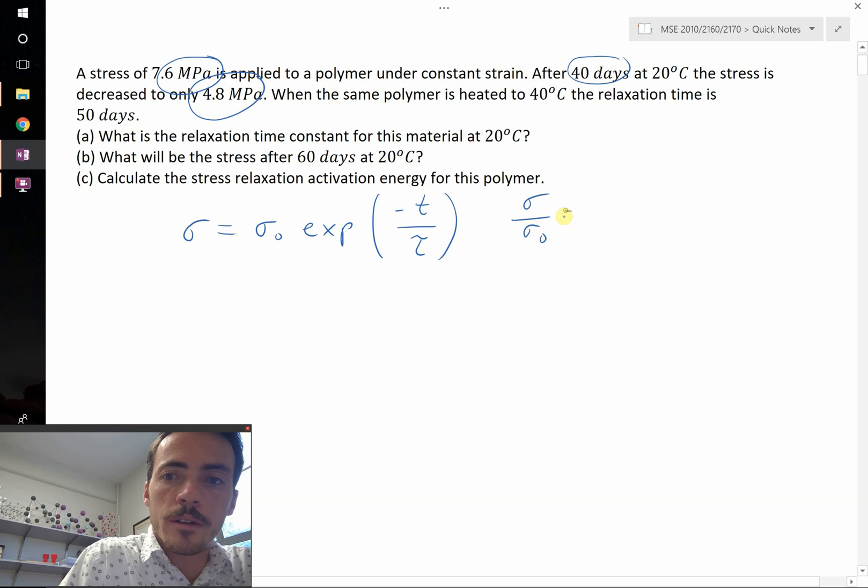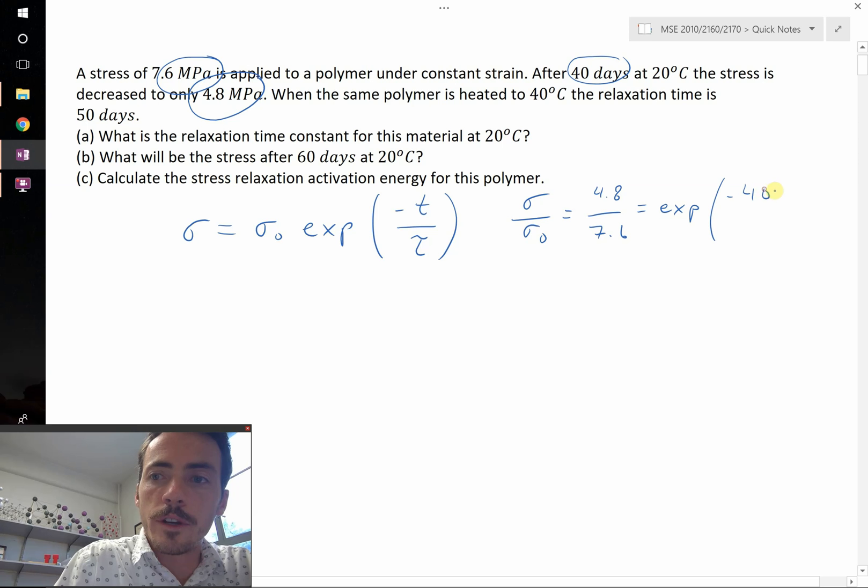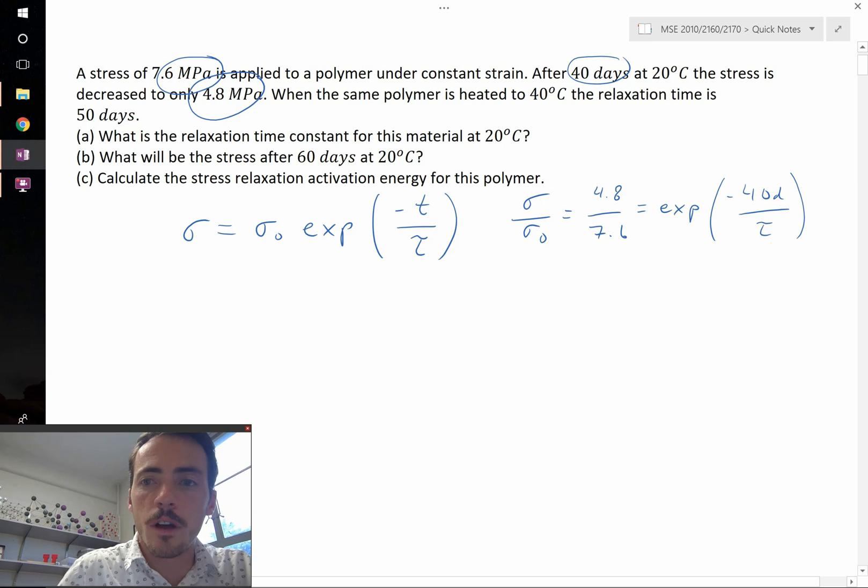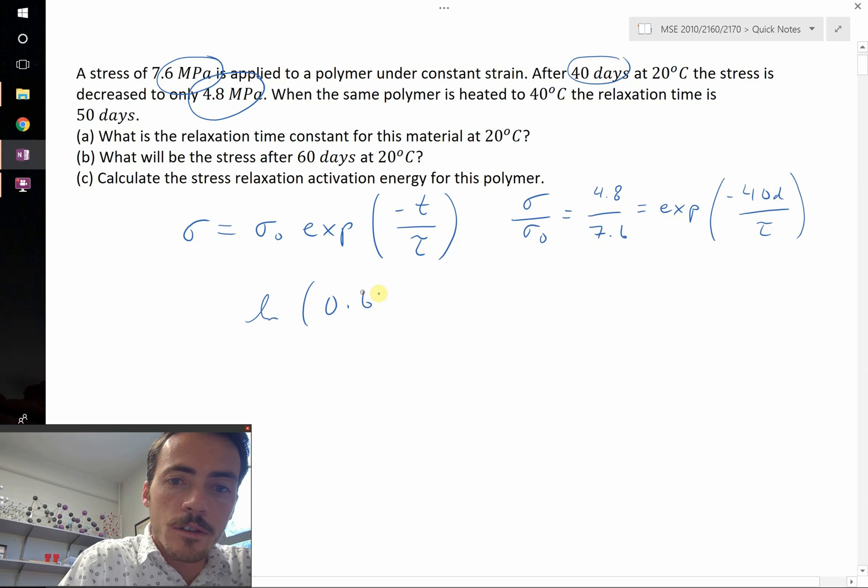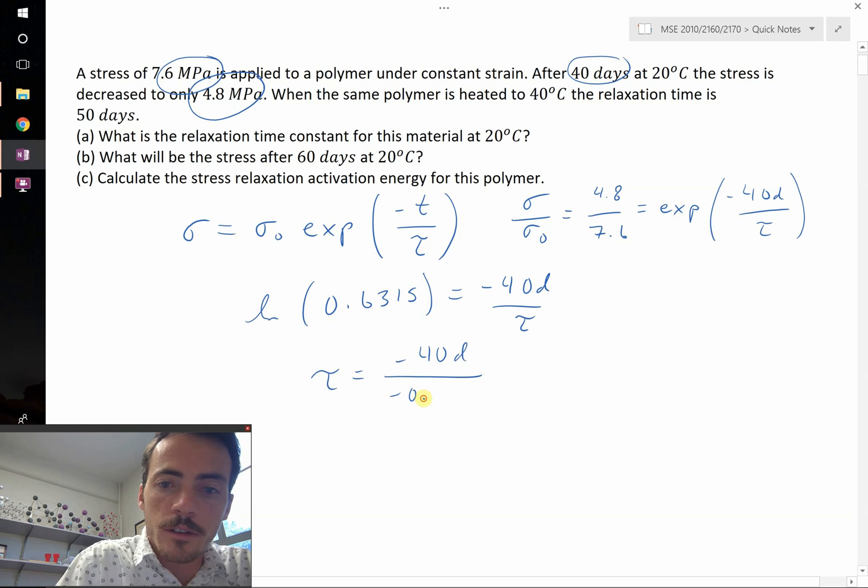So sigma over sigma naught, that's going to be equal to 4.8 over 7.6, the megapascals cancel out. That's going to be equal to the exponential of negative 40 days over tau. If we take the natural log of both sides, that allows us to get rid of the exponential. So we have natural log of 0.6315 on the left hand side equal to negative 40 days over tau. Rearranging and putting tau on the left hand side and dividing both sides by natural log of 0.6315, we have that tau is equal to negative 40 days divided by negative 0.4595, which is equal to 87.04 days.